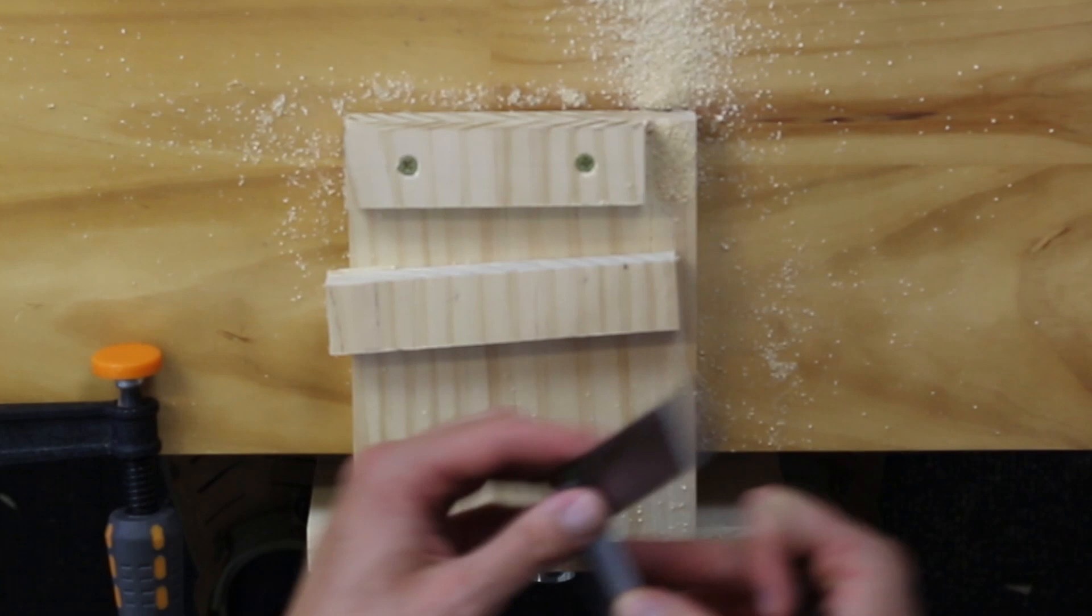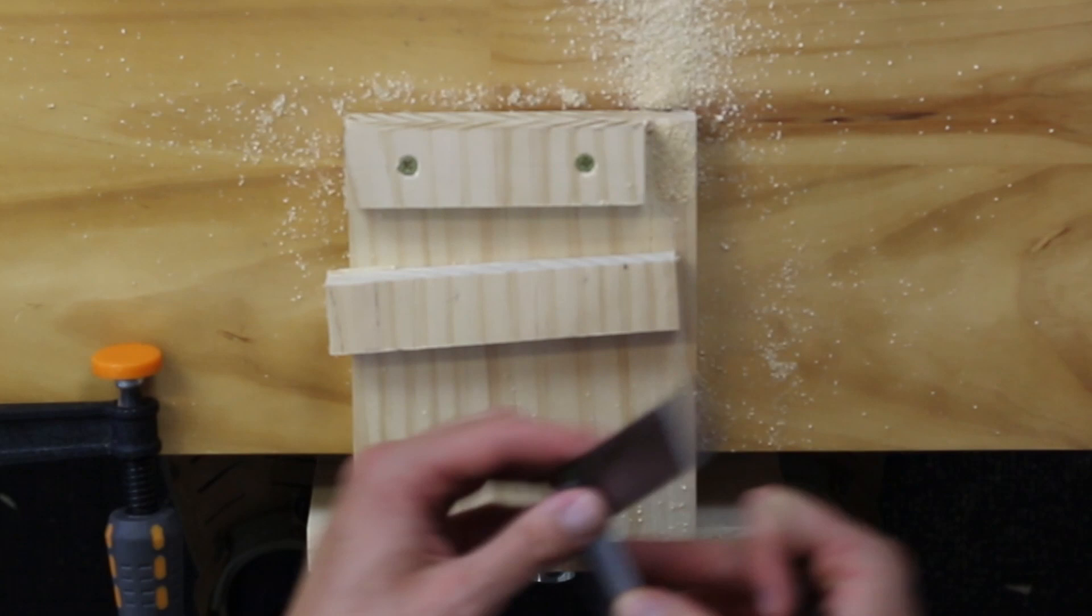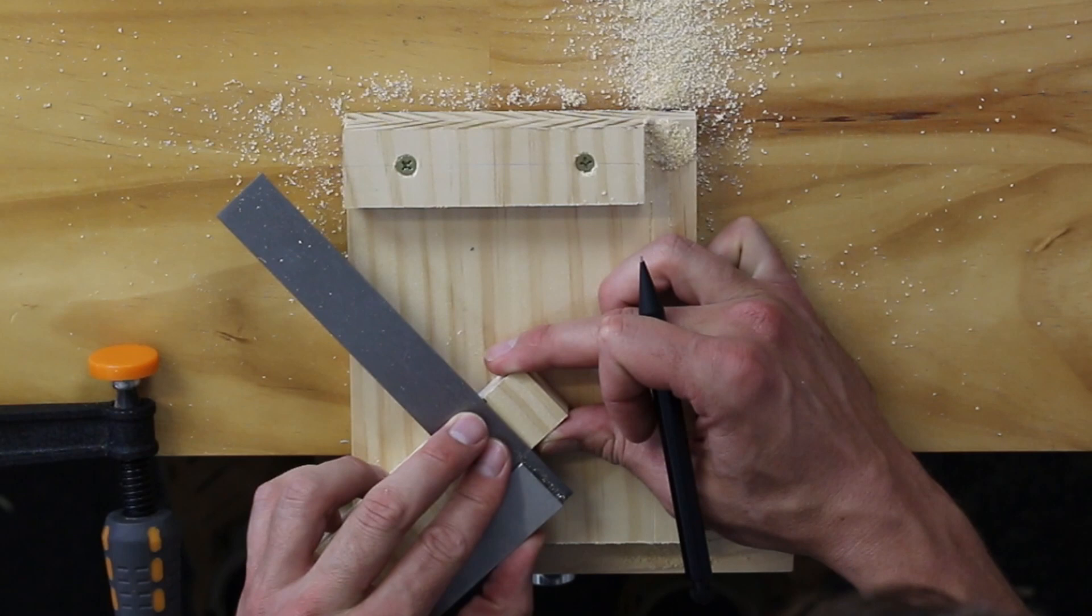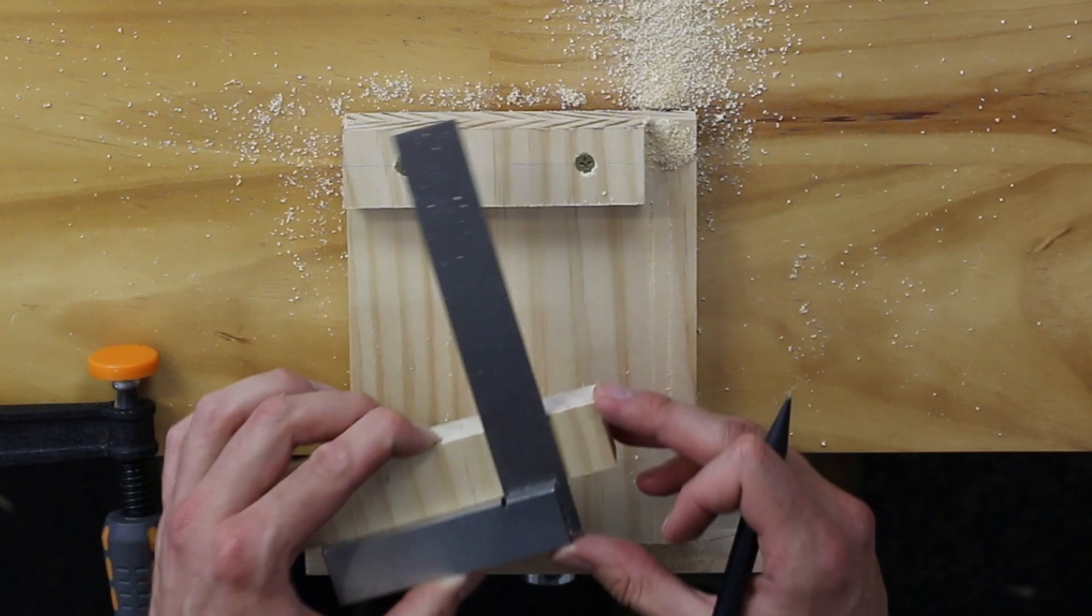From there, get your trusty square. Make sure that its back is firmly pressed against the machine cut side and then mark the line. Make sure to do the same process on the other piece.